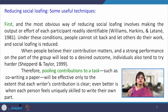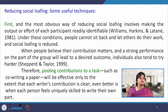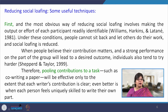When people believe their contribution matters and a strong performance will lead to a desired outcome, social loafing can be reduced. People tend to work harder when their performance is identifiable and acknowledged, and their contribution adds something meaningful to the group output. For example, pooling contributions to tasks such as co-writing a paper — if both authors are acknowledged for their contribution to a scientific article, that will definitely tend to reduce the tendency of social loafing.